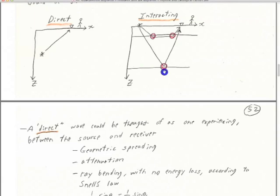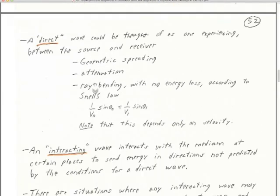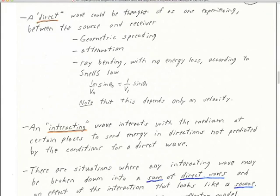We split up the data set using these Feynman-type diagrams into direct waves and interacting waves. These red circles are the points of interaction — either a refraction or a reflection, so it's some kind of wave conversion. If I'm thinking about S waves, a P-to-S wave conversion is another interaction. A source, an exploding reflector, is an interaction. That's the basics of that view.